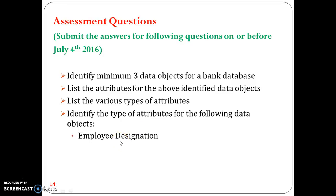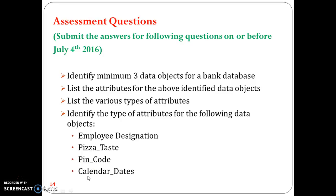For example, employee designation is given — you have to find to which type of attribute it belongs. As another example, for marital status, the values can be single, married, widow, or divorced, so you should conclude that it belongs to a nominal or categorical attribute. Similarly, find the type of attribute for employee designation, visa, PIN code, and calendar dates. Pause the video, go through all the questions, come out with your own answers, and submit them before you come to class on Monday. Thank you.